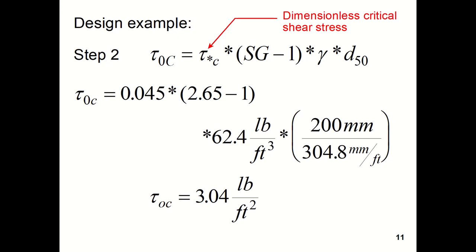So in this case, the τ*c will be used as 0.045. Where that comes from will be discussed in the next video. And then you can see the remaining numbers have been placed in the equation. And the critical shear stress then is 3.04 pounds per foot squared.